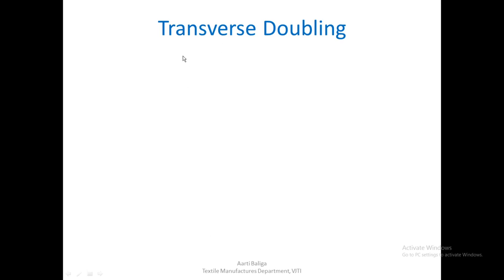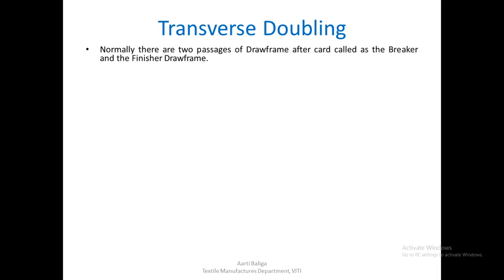There is one more term you may come across: transverse doubling. Transverse doubling has some positive effects on the output material. Normally in the spinning process, we have two passages of draw frame. Although the spinning flow chart is blow room, card, draw frame, speed frame, and ring frame, after the card there are actually two passages of draw frame. The first passage is called the breaker draw frame and the second passage is called the finisher draw frame.